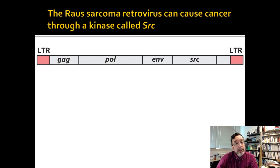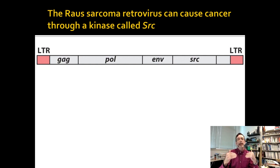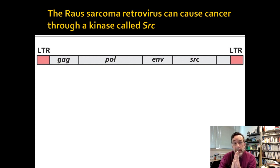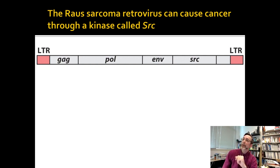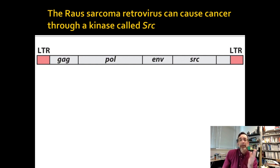You usually have long terminal repeats because that's how the gene gets into the genome — it gets transposed and you have the evidence of that in the LTRs. You can look for those if you're searching for them in a genome. You can look for GAG, PAL, and ENV genes. And sometimes even a SRC gene will go in. If this rings a bell, it should — go back to the signaling chapter. SRC is one of those signaling proteins.